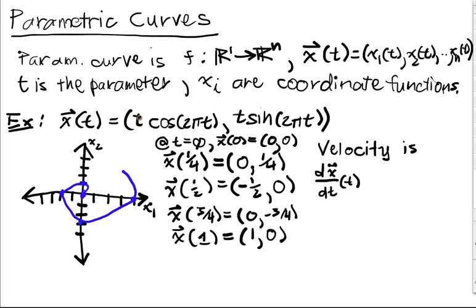How do we take this derivative? Well, we just take the derivative with respect to t of each of the coordinate functions. So this will be equal to the first coordinate is the derivative of t times cosine 2πt. I apply the product rule and I get cosine of 2πt minus 2πt sine of 2πt. That's my first coordinate of the velocity.